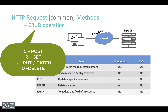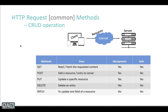Now let's talk about idempotent methods. Idempotent means that every time you make multiple requests with the same parameters, the server will not give you a different response. For example, GET is idempotent — when you fetch something you are not actually changing anything on the server side. Every time you search for the same name on Facebook, you get the same person's profile. That's why GET is idempotent.